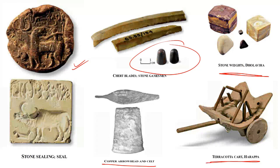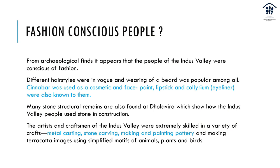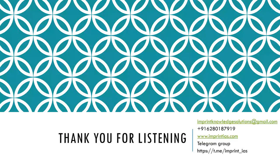There are copper arrowheads and a terracotta cart as well. At the end, how different were they from us? From archaeological finds, we feel that the people of the Indus Valley were fashion conscious. There were different hairstyles in vogue, wearing of beards was popular, and surma was used as a cosmetic — face paint, lipstick, and kajal eyeliner were known to them. Many stone structural remains are found in Dholavira, showing that Indus Valley people used stone in construction, though burnt bricks were used in Mohenjo-Daro and Harappa. The artists and craftsmen of Indus Valley were extremely skilled in a variety of crafts: metal casting, stone carving, metallurgy, painting, pottery, and making terracotta images using simplified motifs of animals, plants, and birds. Thank you so much for listening.